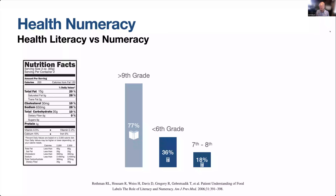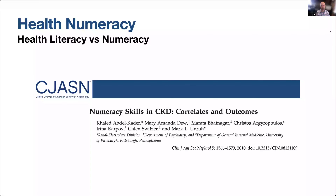This is described in a paper published in 2010 in CJASN, which looks specifically at numeracy skills in patients with chronic kidney disease. In this prospective cohort study of 187 patients with stage 4, stage 5 CKD, and ESRD, there was a high prevalence of limited numeracy — over 50% of patients were able to answer one or fewer numeracy questions correctly — meaning this is a very common problem within our population.